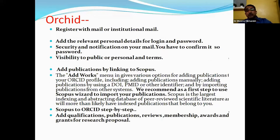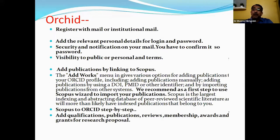For ORCID, the first step is to register with the help of your email or institutional mail, then add the relevant details. You log in with your ID and password, and your publications should be added automatically. You can link your publications with the help of Scopus or add work manually using DOI, PubMed IDs, and other identifiers.